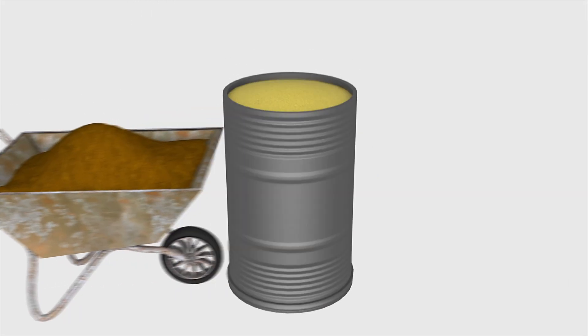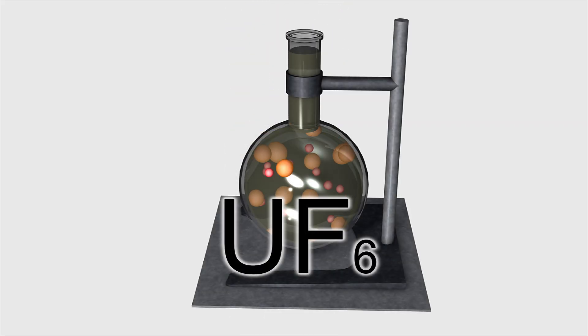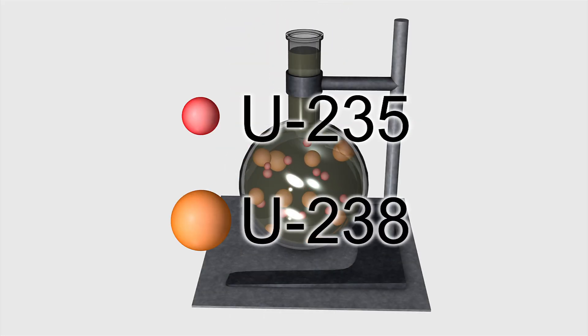The ore is first made into yellow cake. Fluorine is then added to create gaseous uranium hexafluoride. Uranium hexafluoride can be enriched by diffusion.